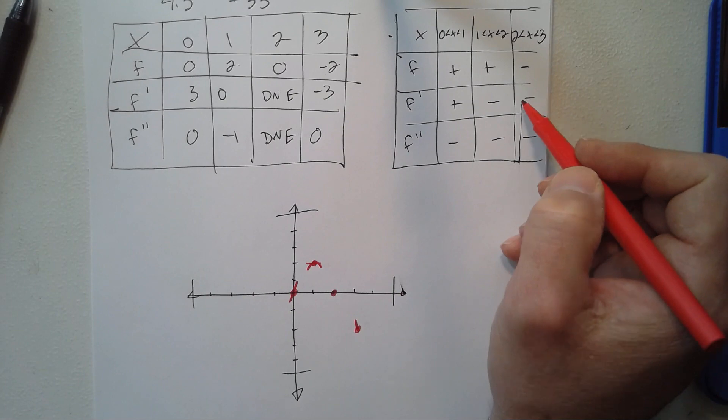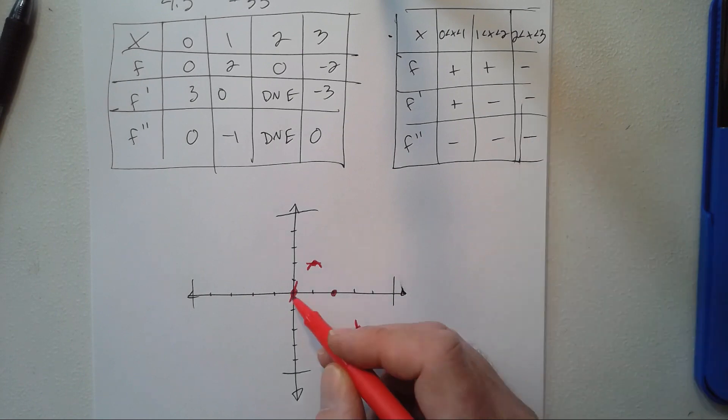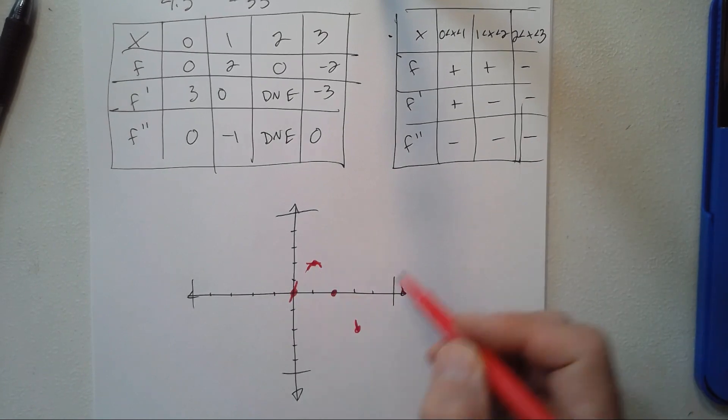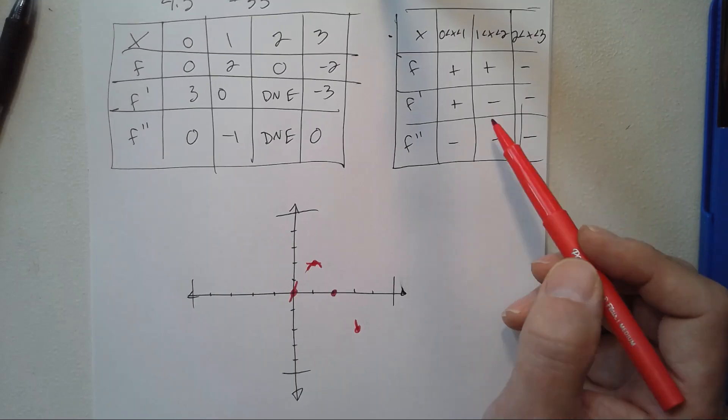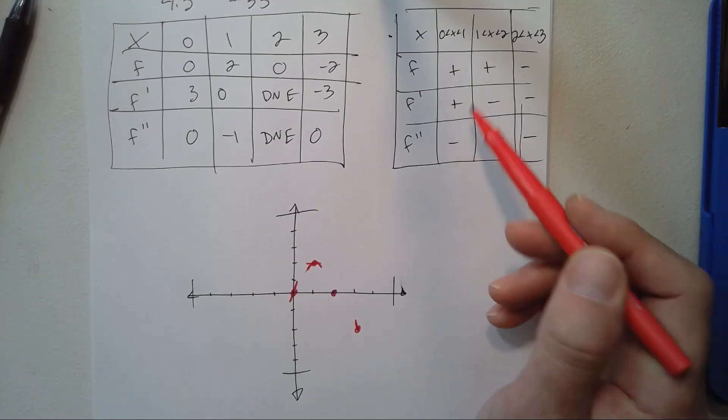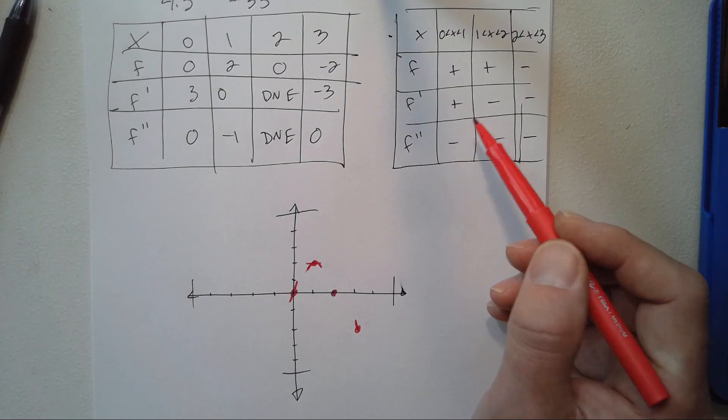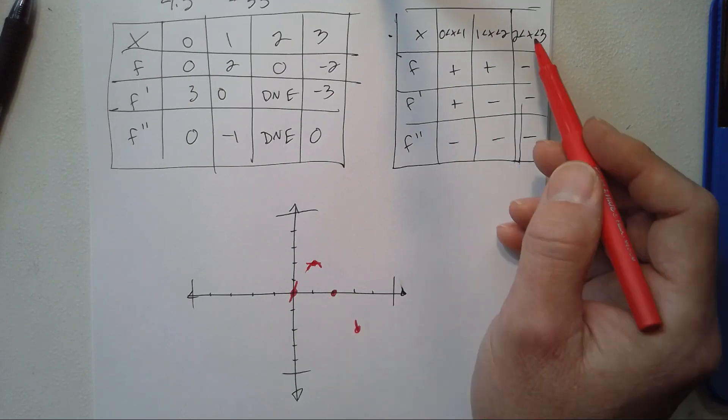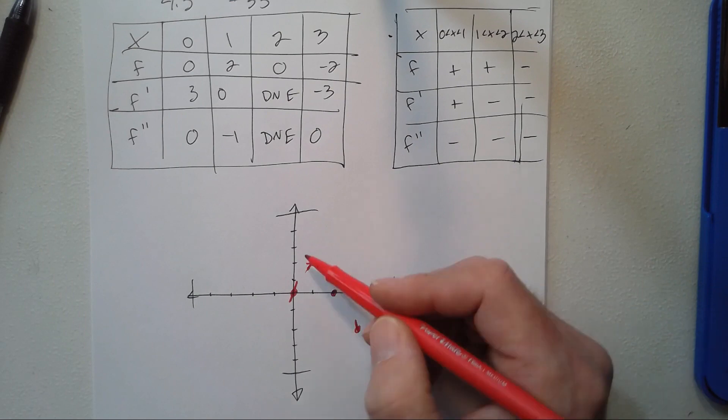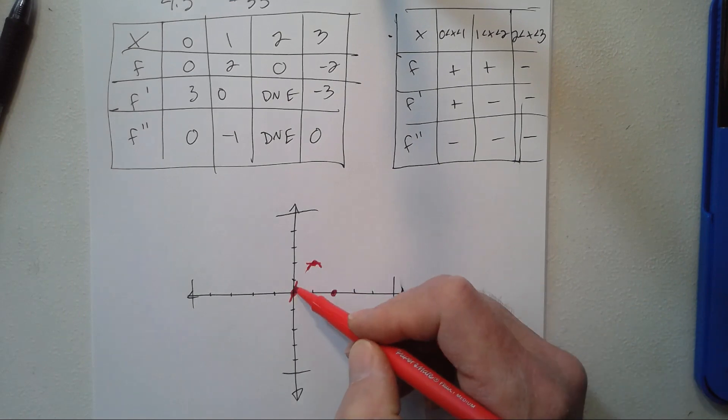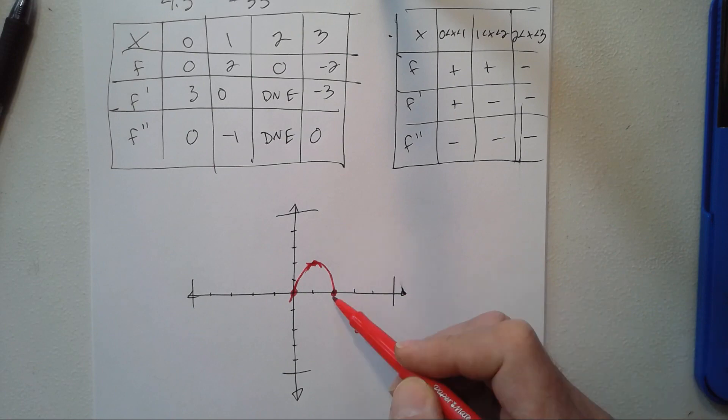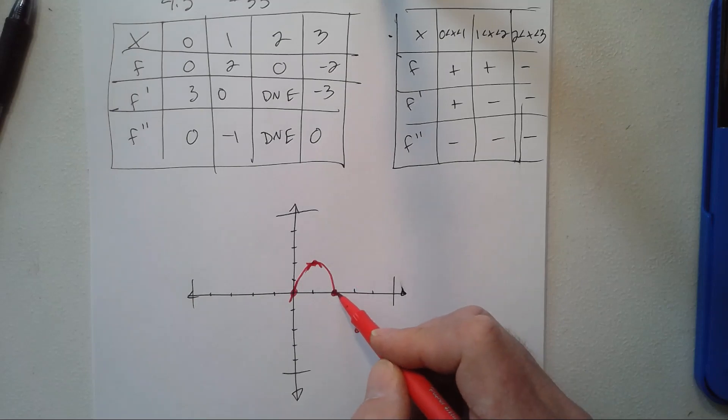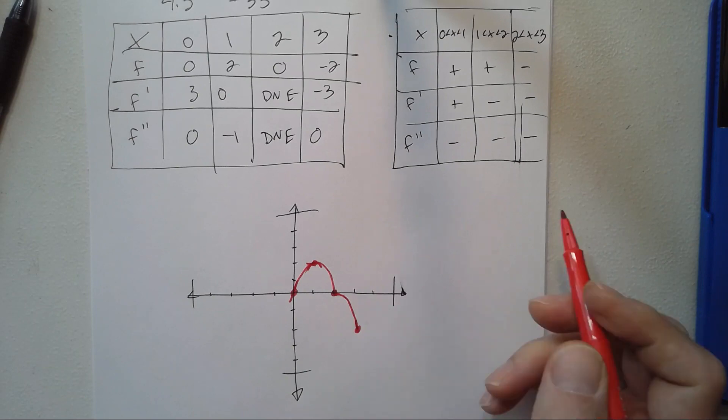The last clues are concavity: between 0 and 1 it's concave down, between 1 and 2 it's concave down, between 2 and 3 it's concave down. So the only way this works is we need to decrease—the derivative can't exist there, so we have to create a corner or cusp. It has to decrease and remain concave down, so something like that would meet all the criteria.